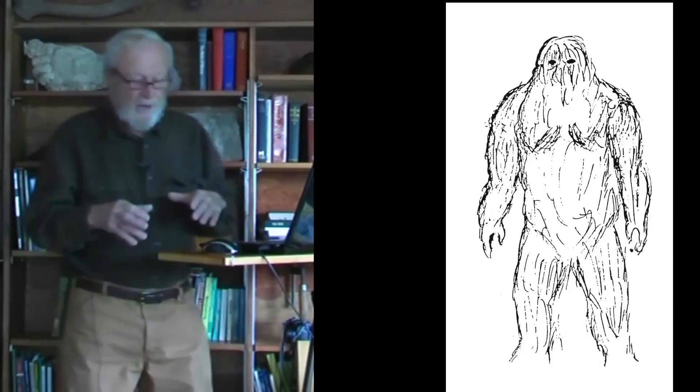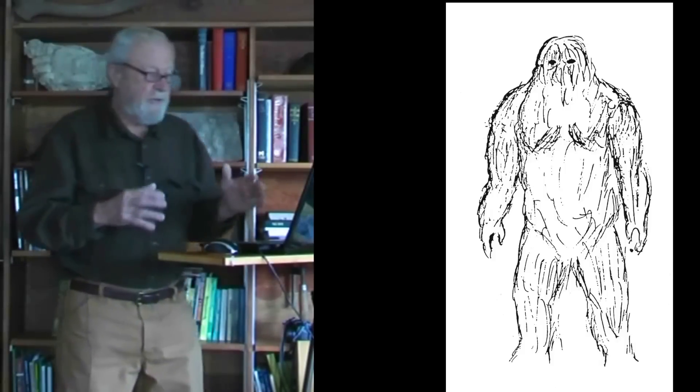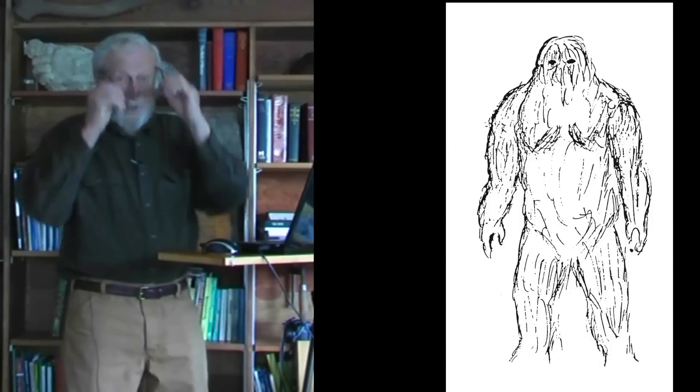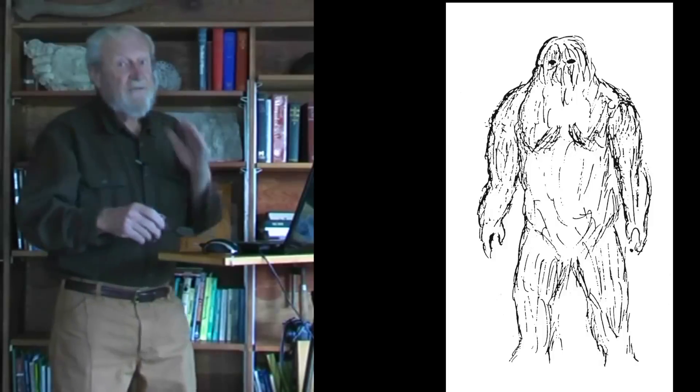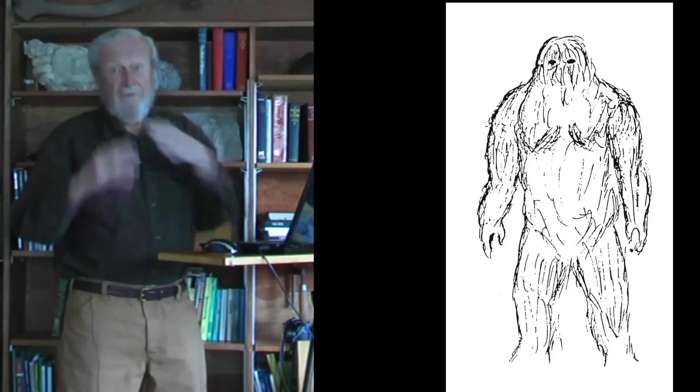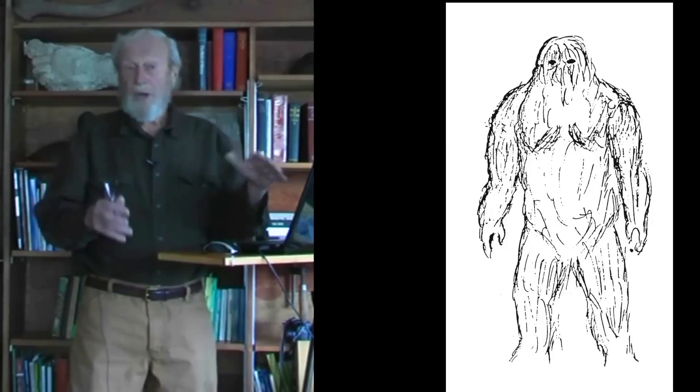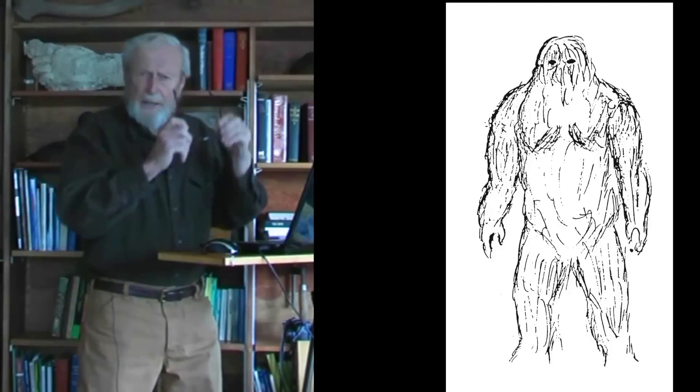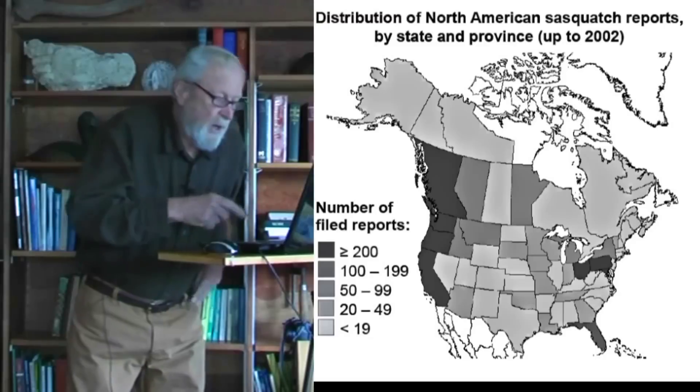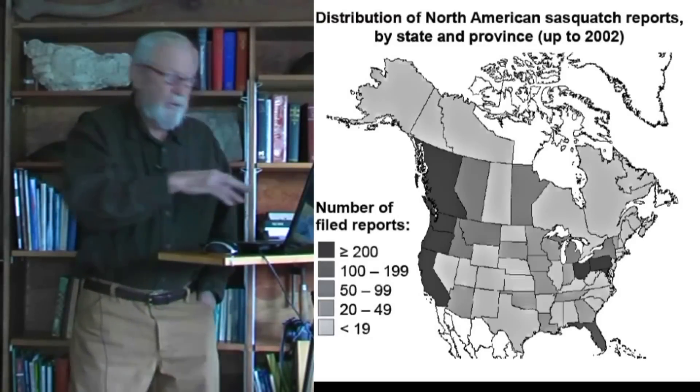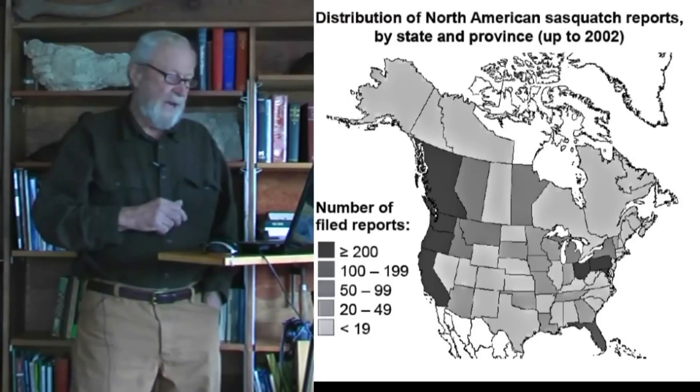A few years ago, if one mentioned Sasquatch from Ontario, Canada, or from Ohio, eyebrows would be raised even more than usual because the Sasquatch used to be considered a mammal, if it existed, of the Pacific Northwest, the western states of the U.S. and Canada. Let's look at this map which shows the distribution of reports. It's getting a bit old now, 2002 is when I made that map.